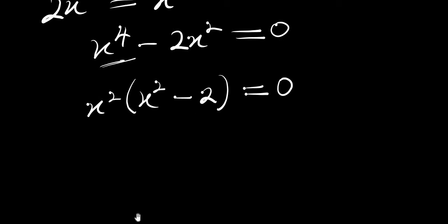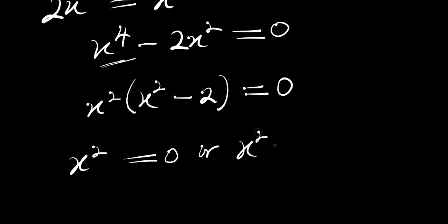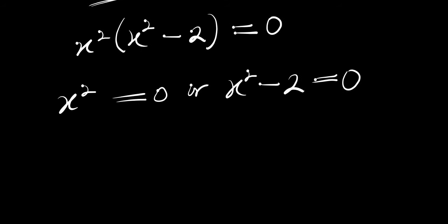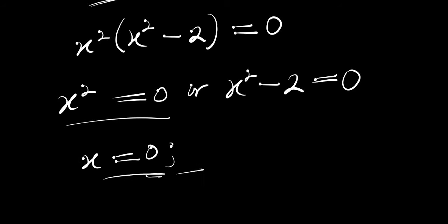The next thing we are going to do is set up two different equations: x squared equals 0, or x squared minus 2 equals 0. Now if x squared equals 0, that means x equals 0. This is one of the solutions.